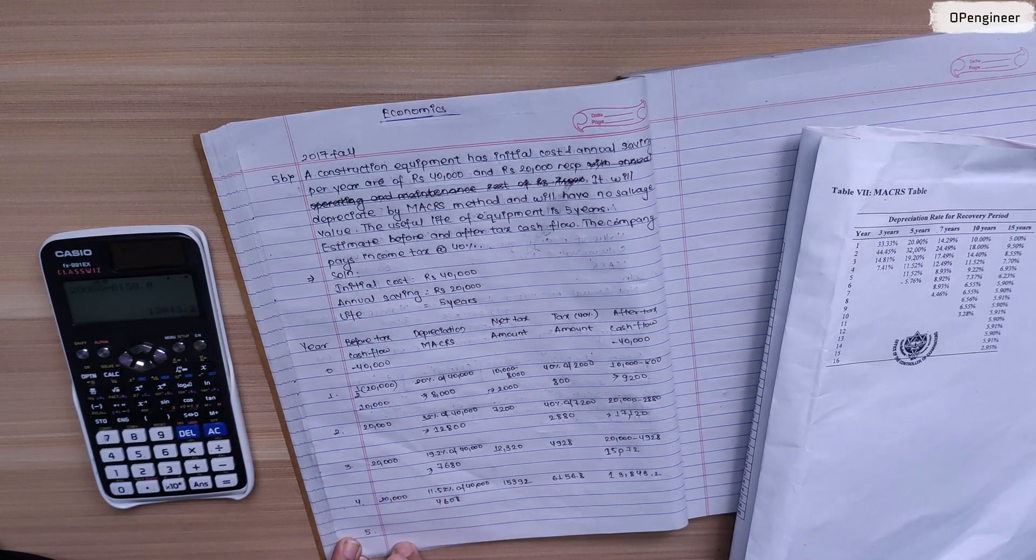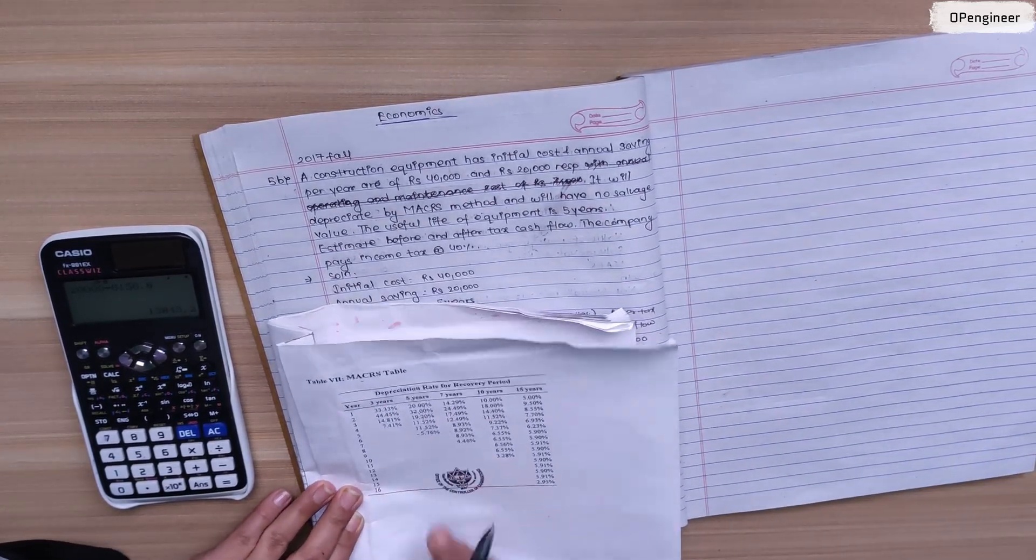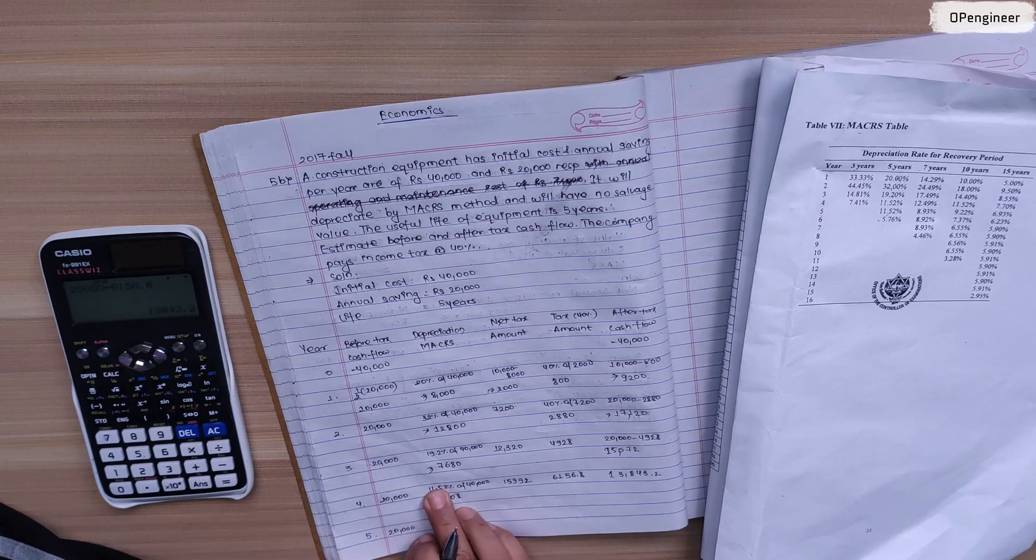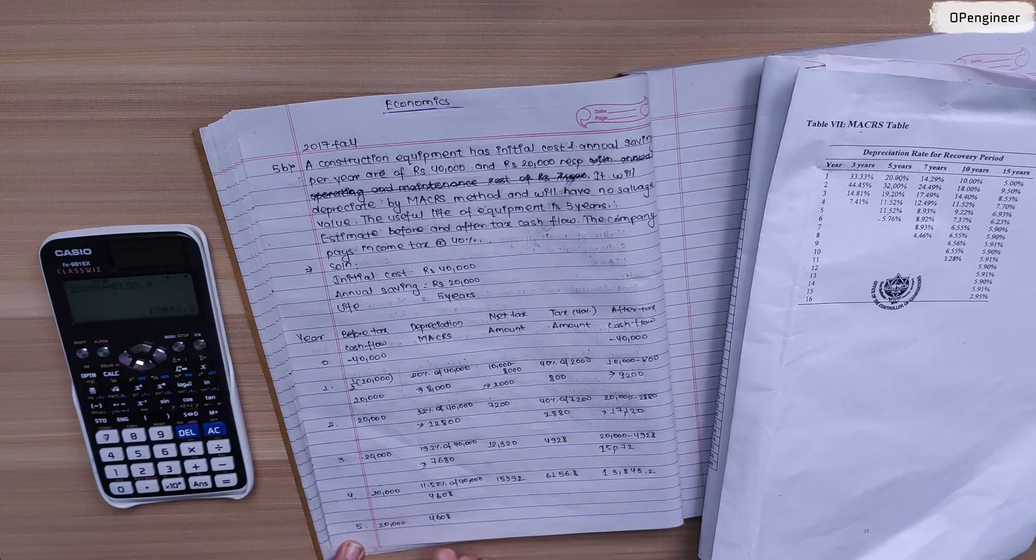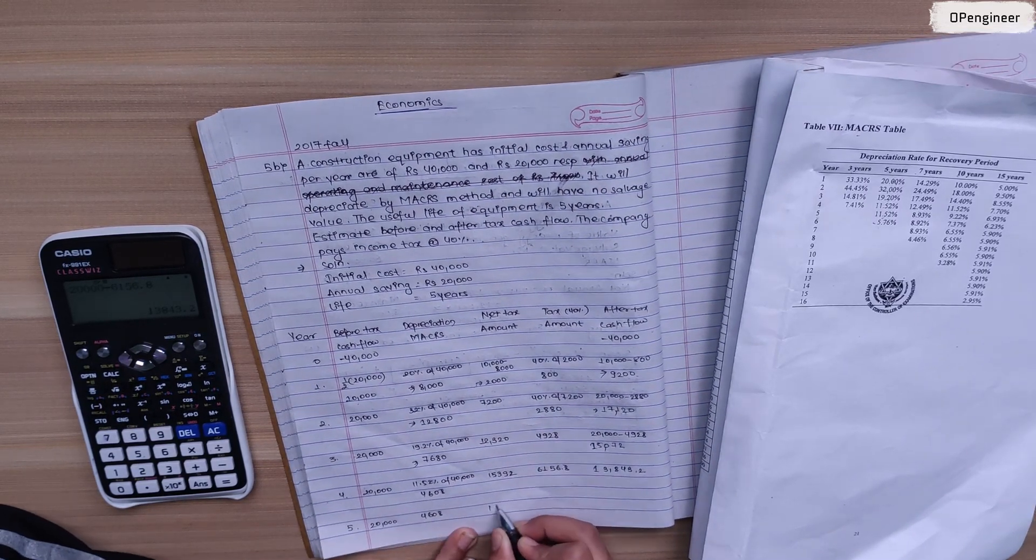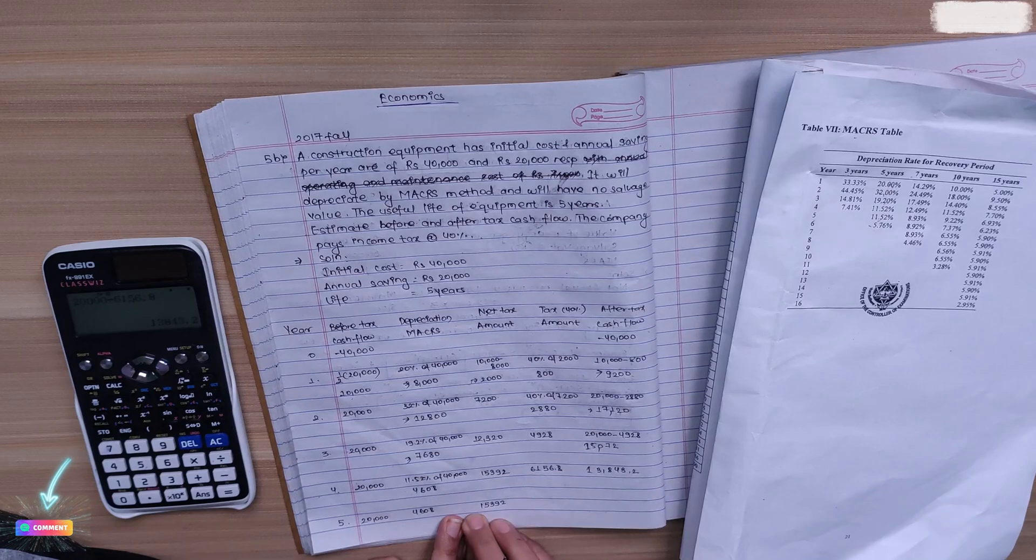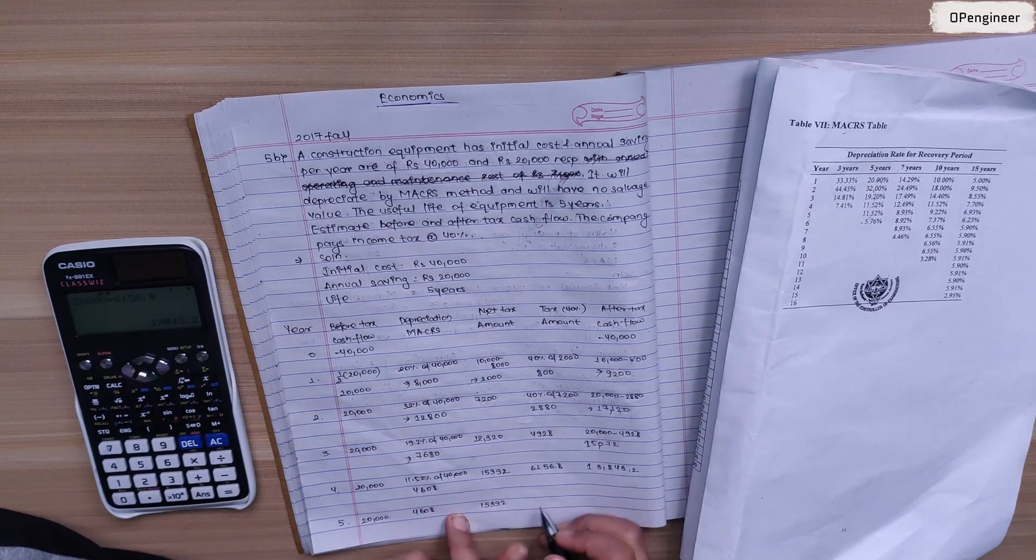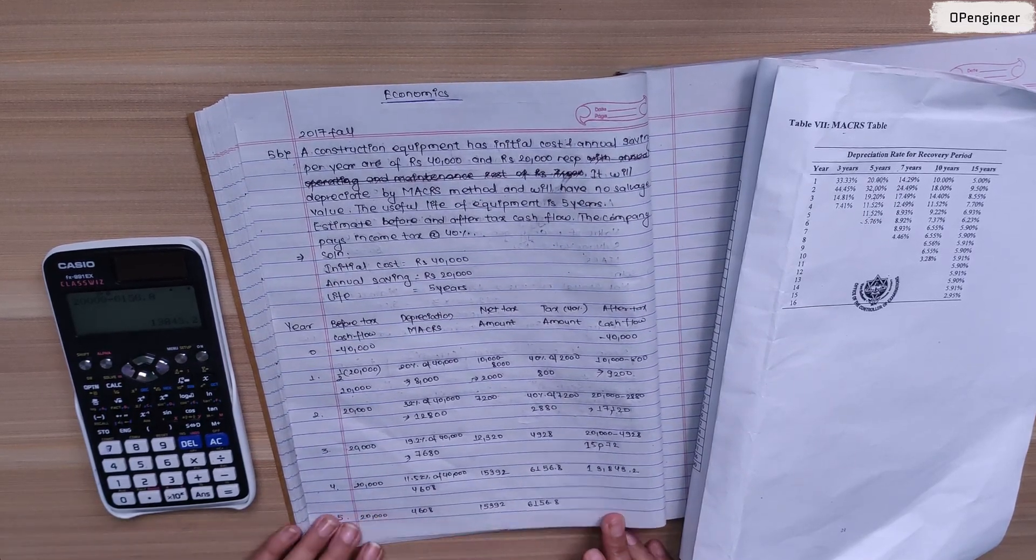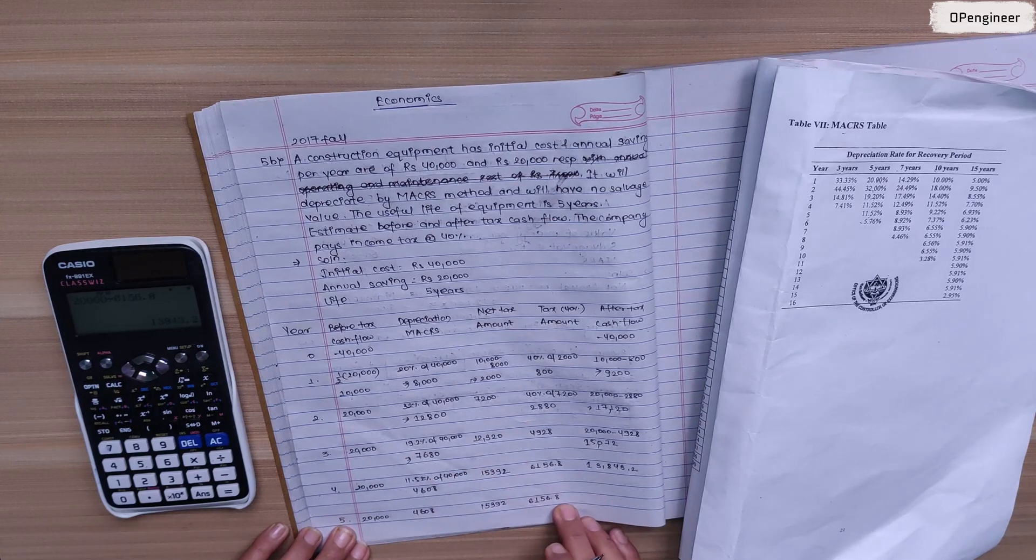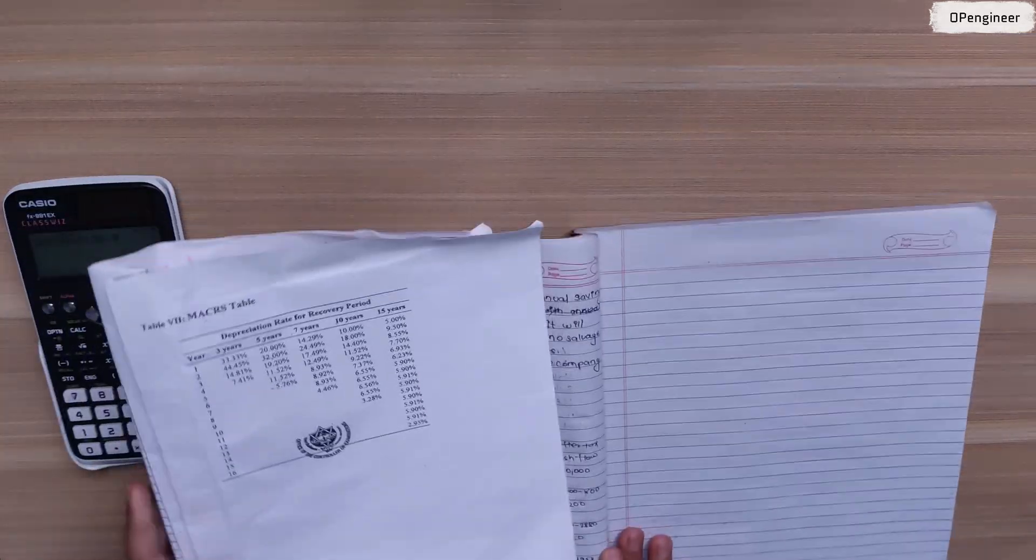In the fifth year, before tax is 20,000. Fifth year depreciation is 11.52% of 40,000, which is 4,608. Net taxable is 20,000 minus 4,608 equals 15,392. Tax is 40% of 15,392, which is 6,156.8. After tax cash flow is 20,000 minus 6,156.8 equals 13,843.2.